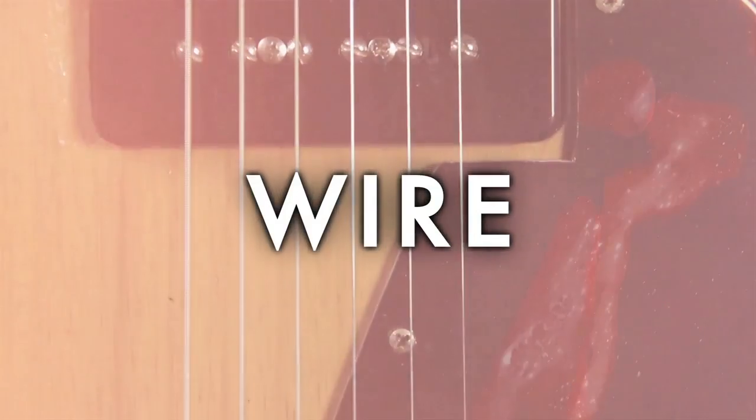So the copper wire used to wind pickups varies in gauge. The standard of the industry back when they started winding them was 42 gauge, and usually the standard now is 43 gauge. 42 is a little bit thicker, so it takes less winds around the magnets to produce the same output, and at the same time it produces a different tone.